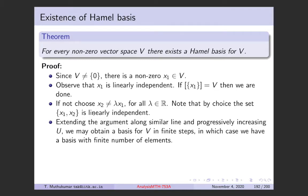Arguing as before, look at the span of {x₁, x₂}. If it generates all of V, we stop and have found a Hamel basis. If not, pick x₃ outside the span and continue. If this process stops in a finite number of steps, we have a Hamel basis of finite cardinality.